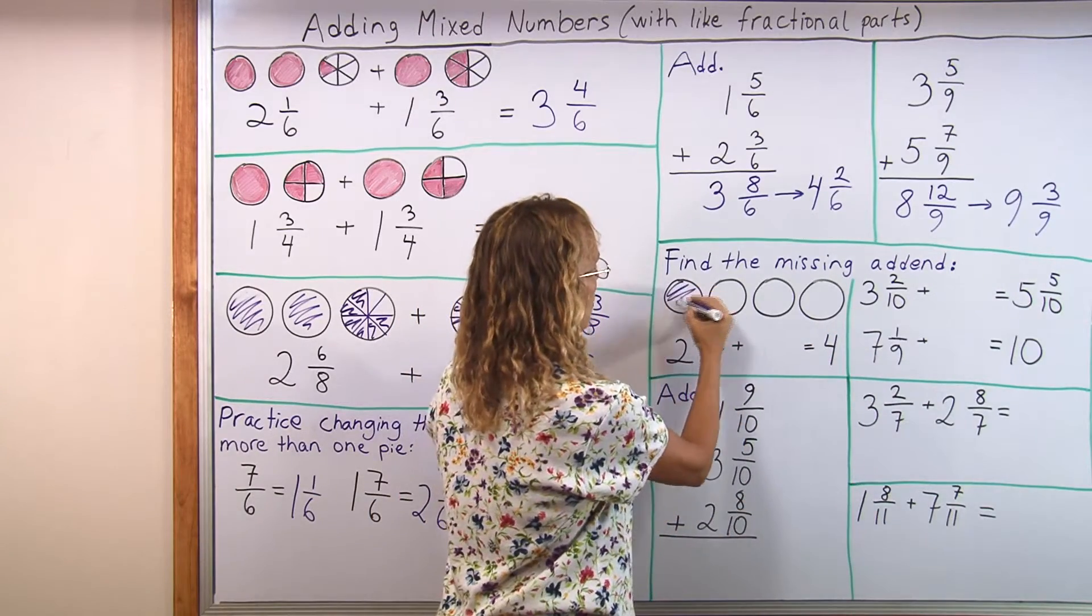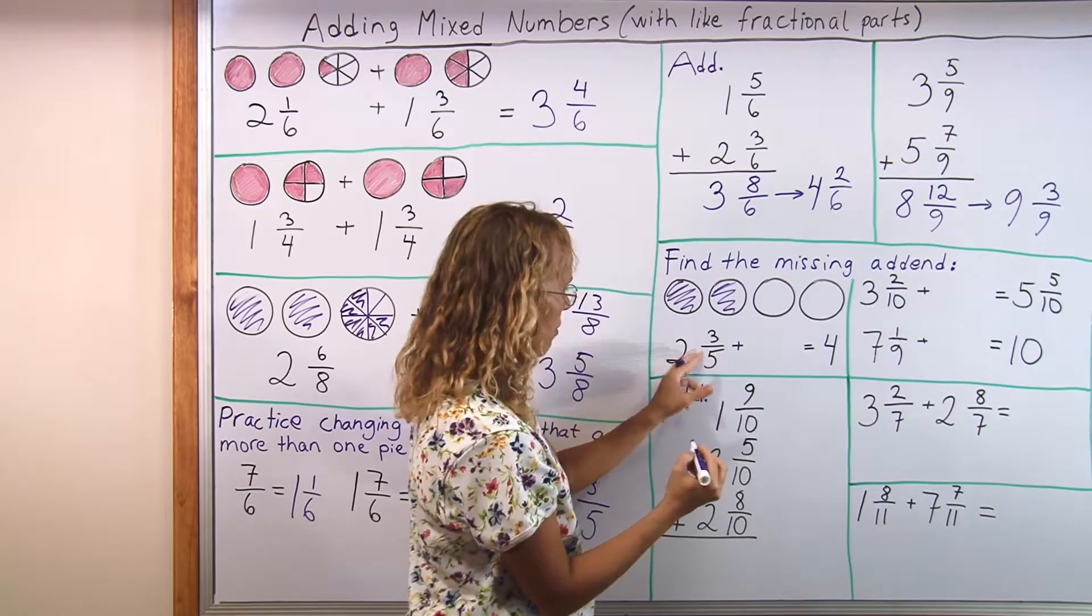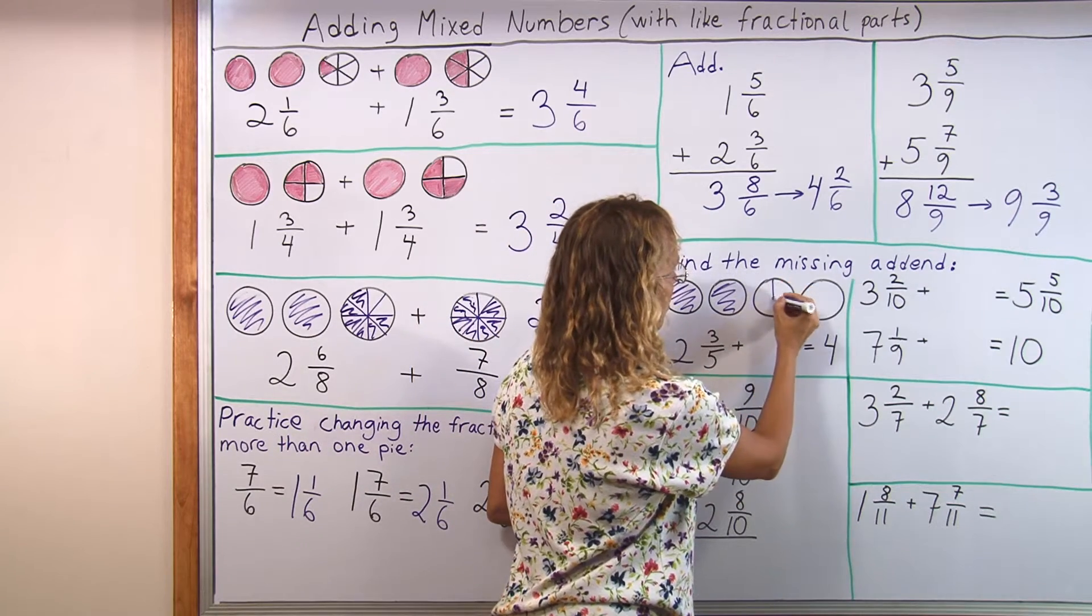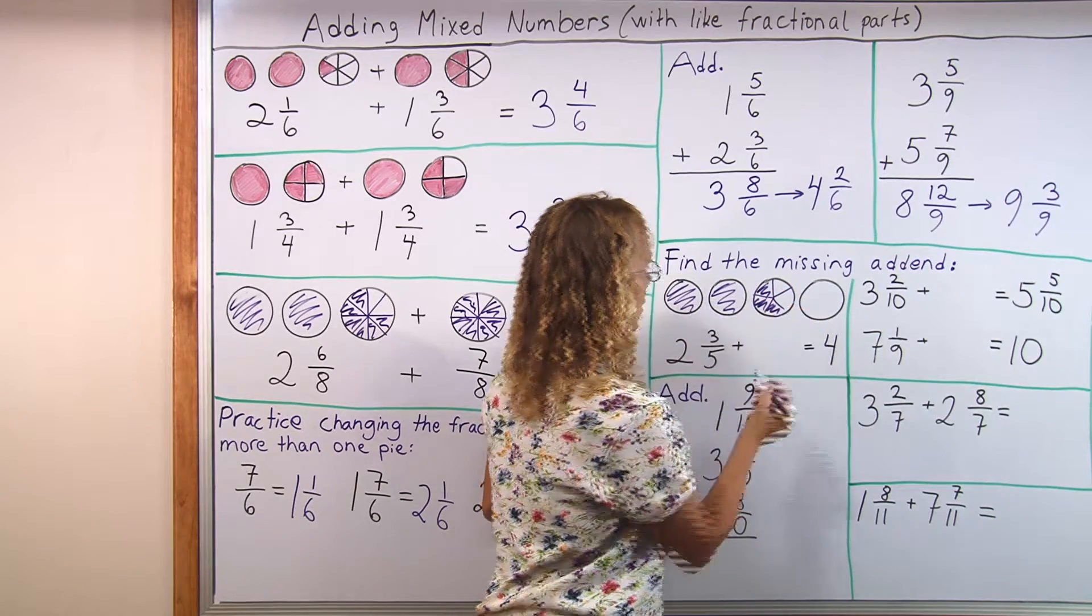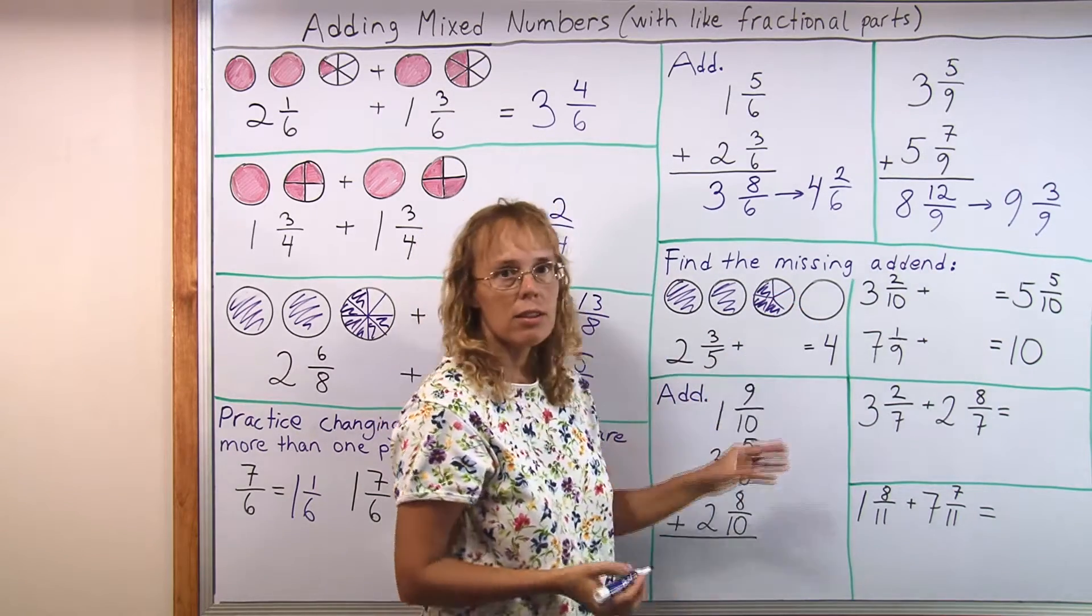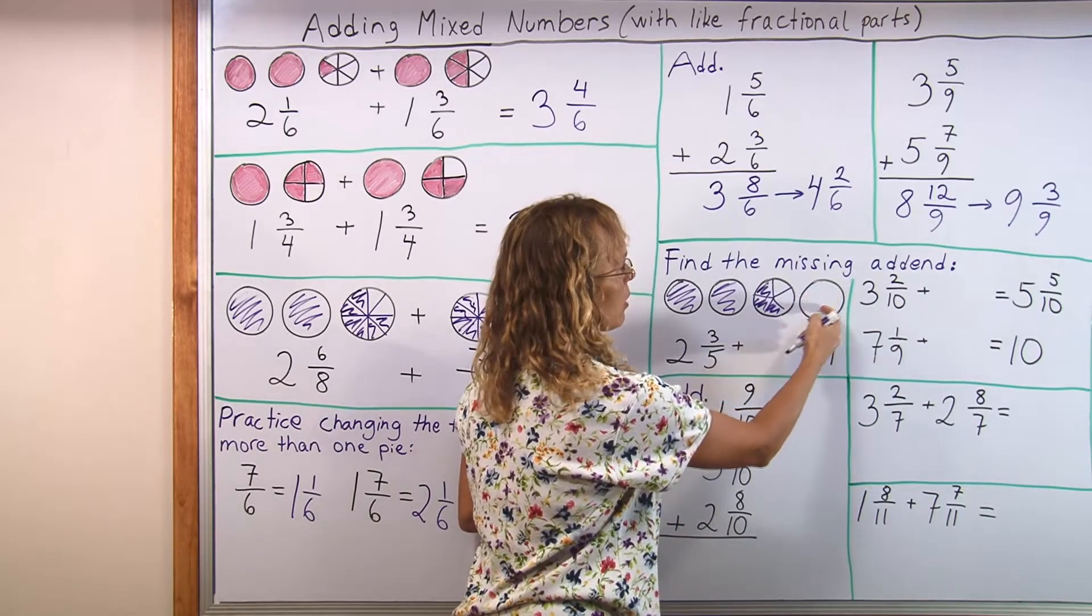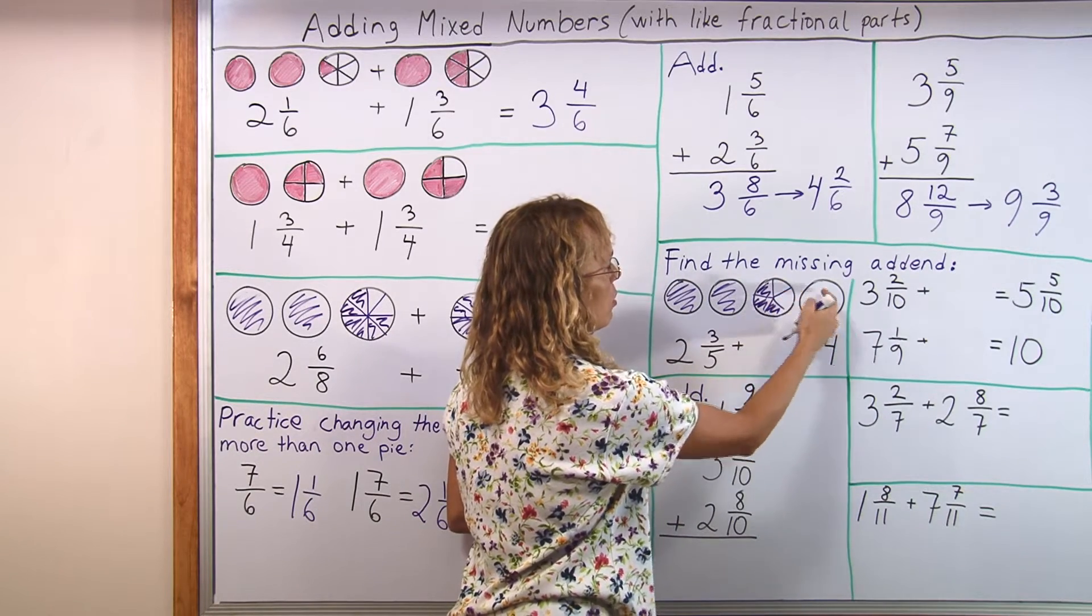Find the missing addend. We have 2 and 3 fifths plus something makes 4. I drew 4 whole pies here for students to help think. They can color the 2 and 3 fifths. Divide this into fifths. Color 3 fifths. And so how much more needs to be colored to make 4 would be of course this 1 whole pie here and these 2 fifths.